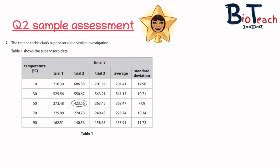You can see that this particular person has done the temperature range from 10, 30, 50, 70 and 90, so this is the table they've given you.